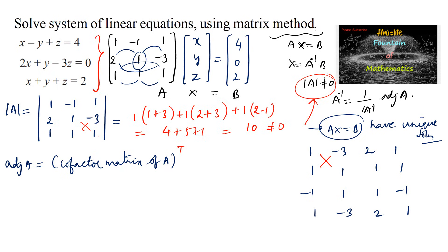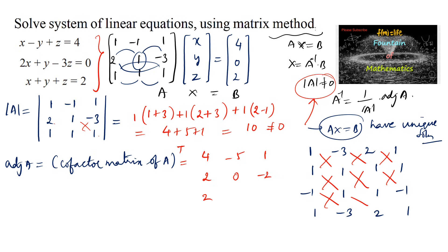Computing the cofactor values: 1×1 minus (−1)×(−3) gives 1+3 = 4; next −3−2 = −5; 2×1 minus 1×1 gives 2−1 = 1; then 1+1 = 2; 1−1 = 0; −1−1 = −2; 1−(−1×−3) gives 1−3 = −2... and continuing: 3−1 = 2; 2+3 = 5; and 1+2 = 3. Taking the transpose of this cofactor matrix gives the adjoint.